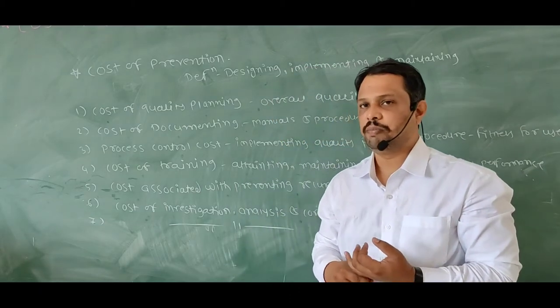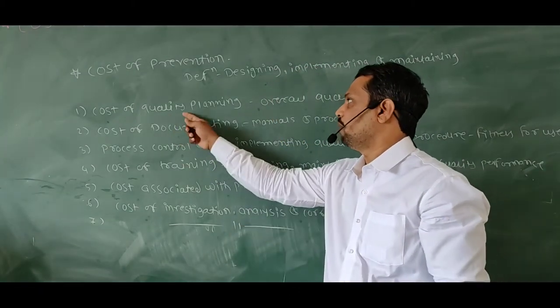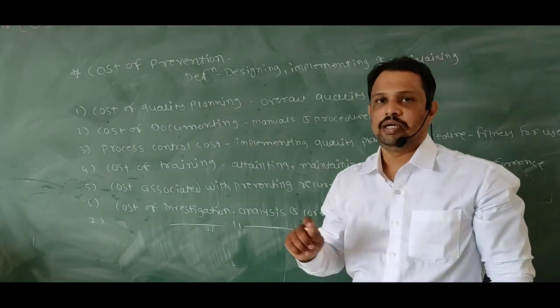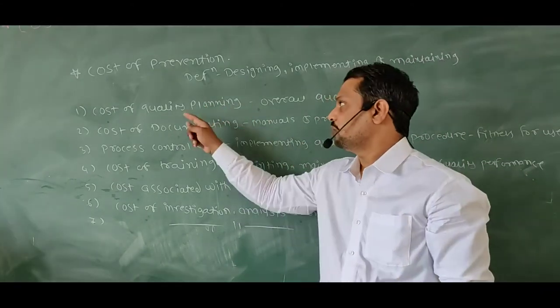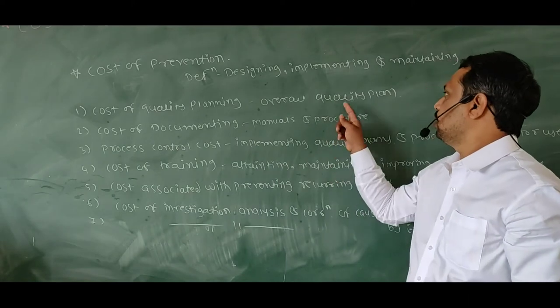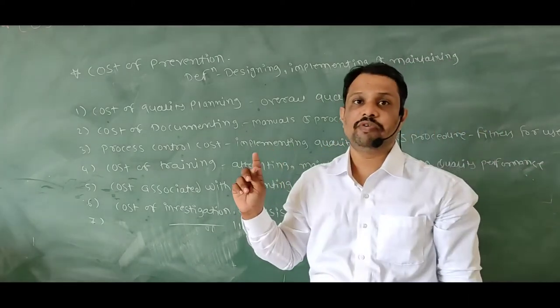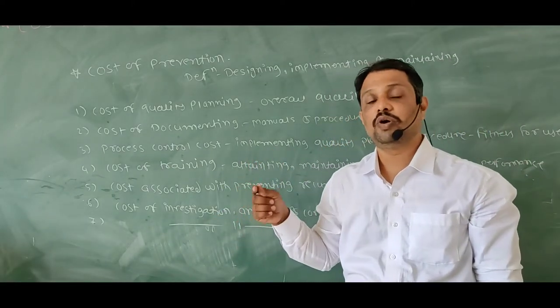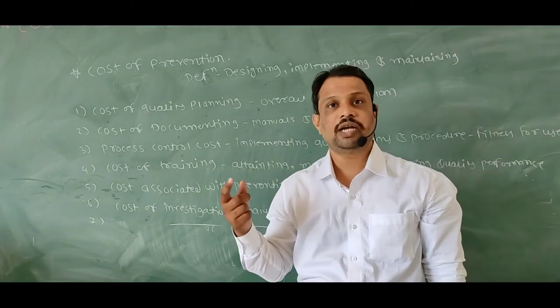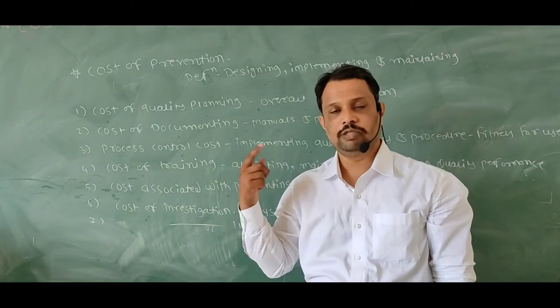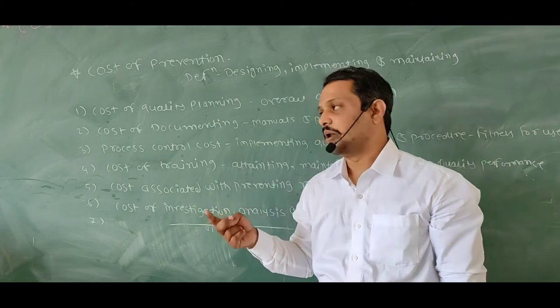It includes cost of quality planning. In cost of quality planning, overall quality plan - it is the cost associated with designing your overall quality plan, cost associated with research and development, inspection plan, and reliability plan.